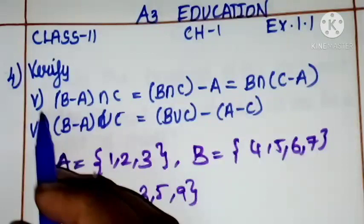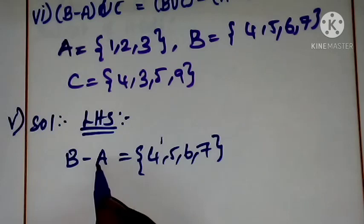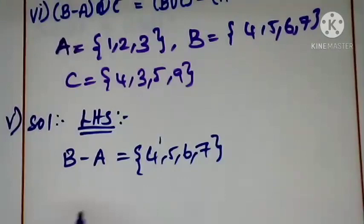5th and 6th subdivisions. We assume A, B, C. 5th subdivision solution: LHS B-A. A is {1, 2, 3}, B-A is {1, 2, 3}.